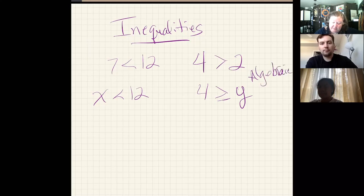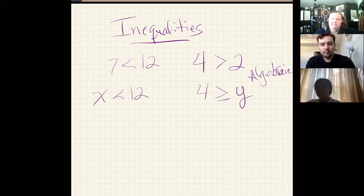Or 4 is greater than or equal to y. The variable might change. But this is what we call an algebraic inequality because we're using a variable instead of numbers.